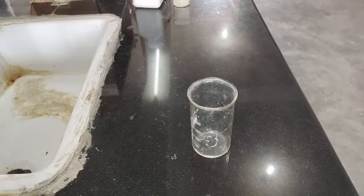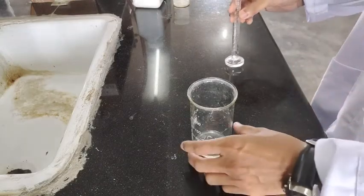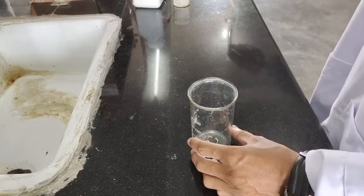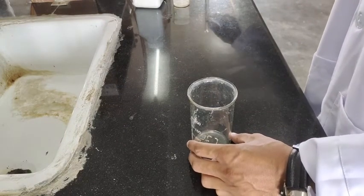Weigh accurately around 1 gram of hydrogen peroxide, which comes around 0.9 ml, and transfer it into a beaker.